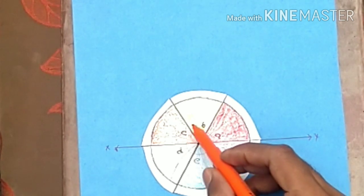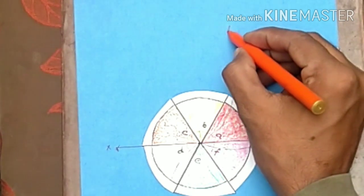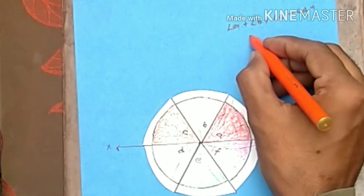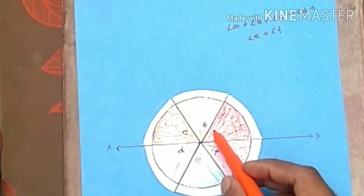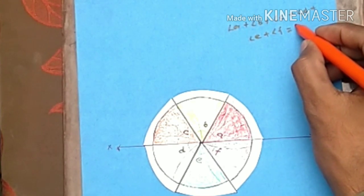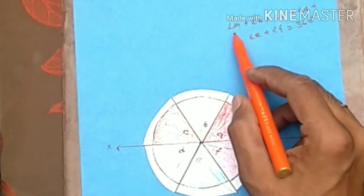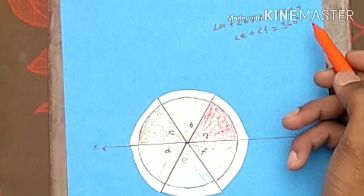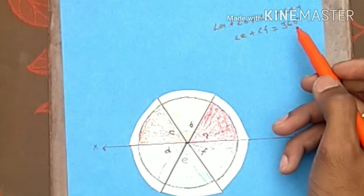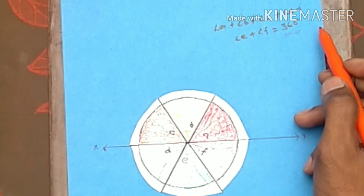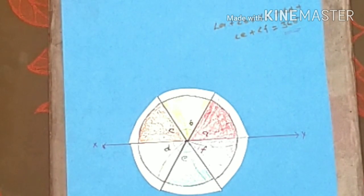Take your glue and paste all six angles around point M. As we can see, they form a complete circle at 360 degrees. So Angle A + Angle B + Angle C + Angle D + Angle E + Angle F = 360°. Since all these are exterior angles of the polygon, this demonstrates the angle sum property: the sum of exterior angles of a polygon is 360°.